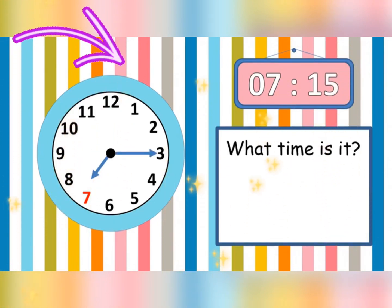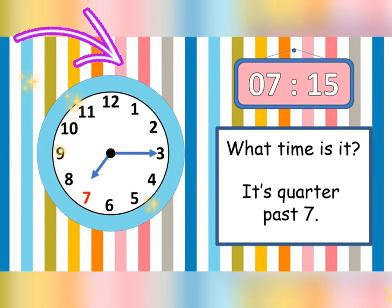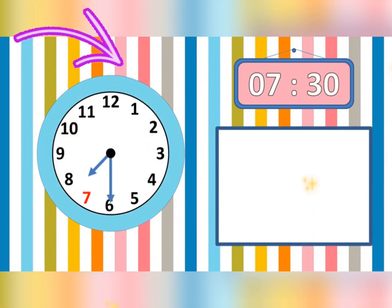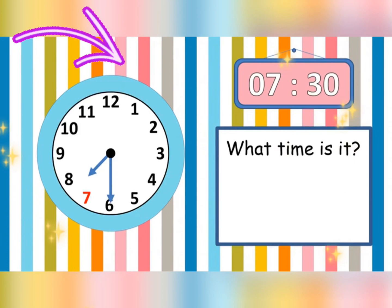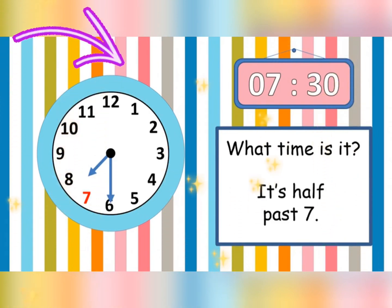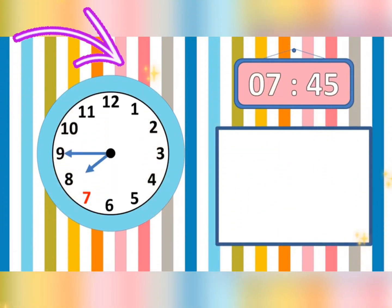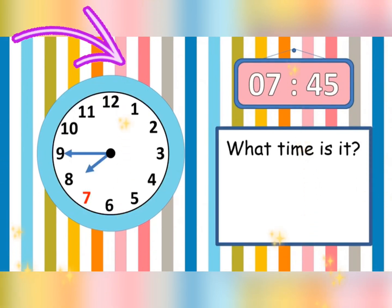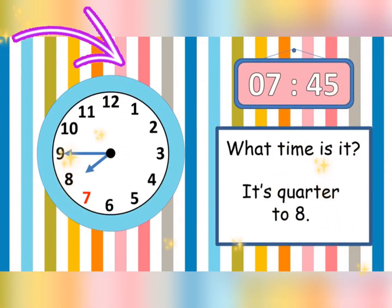What time is it? It is quarter past 7. What time is it? It is half past 7. What time is it? It is quarter to 8.